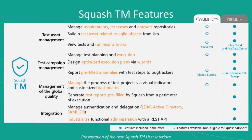Squash TM features are available in two versions. The Community version is free, based on an open source core, and includes many Squash TM features. The Premium version is available commercially and allows the use of additional bug trackers like Jira, Redmine, RTC, or Tulip, and supports Squash in an agile way with Jira Cloud or Jira Data Center. All feature details are available on our website, squashtest.com.